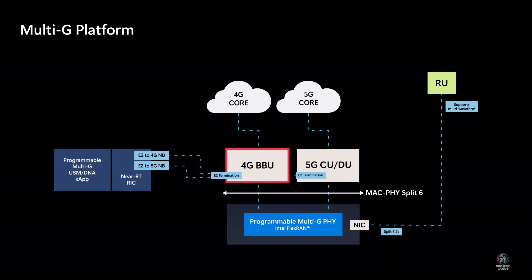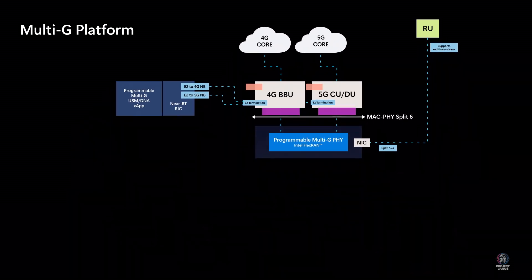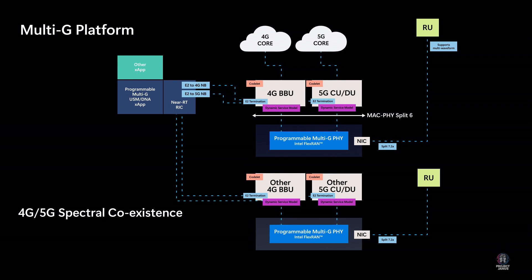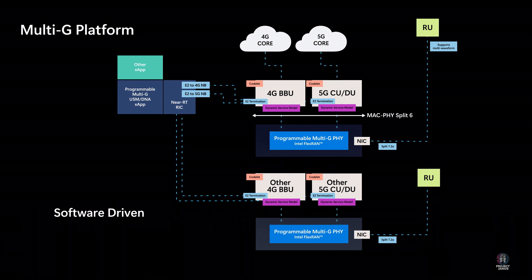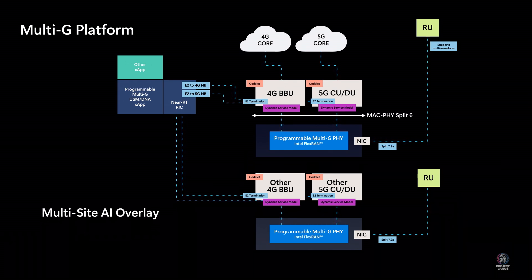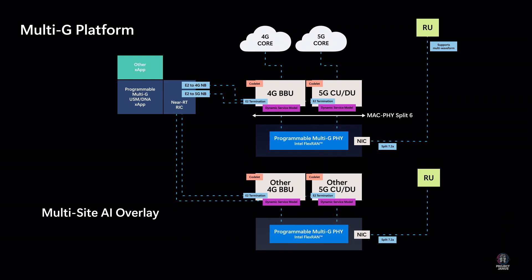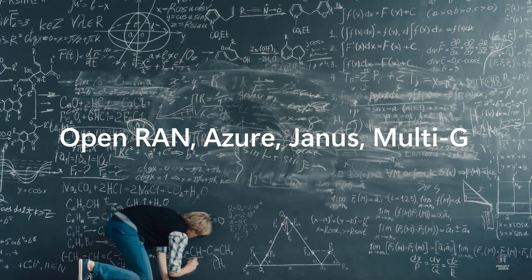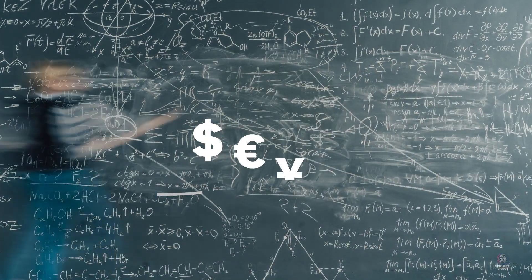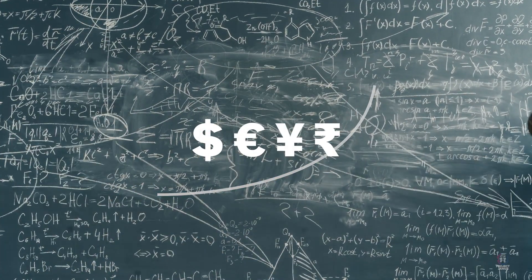And for legacy 4G BBUs, Janus can also use the E2 interface to leverage X-App innovations. Multi-G with the Nexus Janus architecture is extensible for 4G and 5G coexistence and provides a software-driven platform for innovations such as adding 6G waveform candidate OTFS, RIC sharing, and AI overlay to make sense of many cellular sites. As demonstrated here, cloud, software-driven systems and spectral coexistence via OpenRAN, Azure, Janus and Multi-G could have key roles to play in improving the innovation capabilities and profitability of mobile operators around the globe.